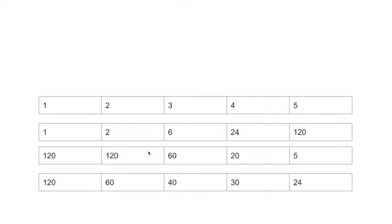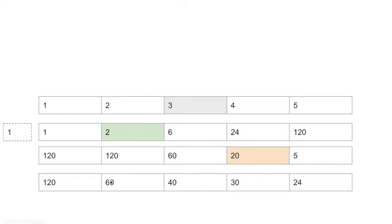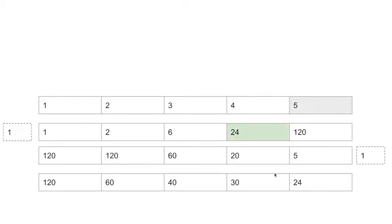We can iterate through and do this for every value. At the first element, pre is 1, so 1 times 120 is the result. At 2, it's 2 times 1 times 60 giving 60. At this index the pre is 2 and the post is 20, so 2 times 20 gives 40. In the pre-table we have 6, in the post-table we have 5, and so on. This gives us our result.